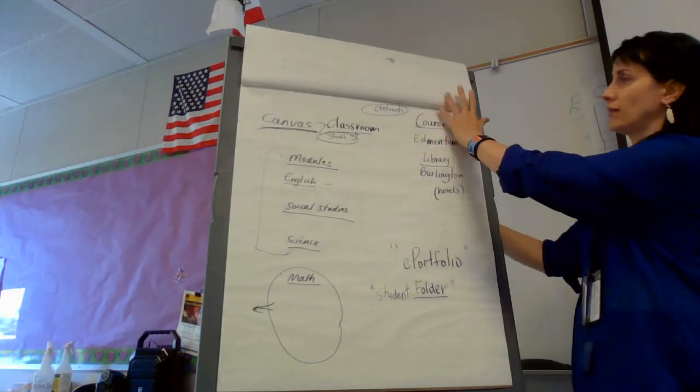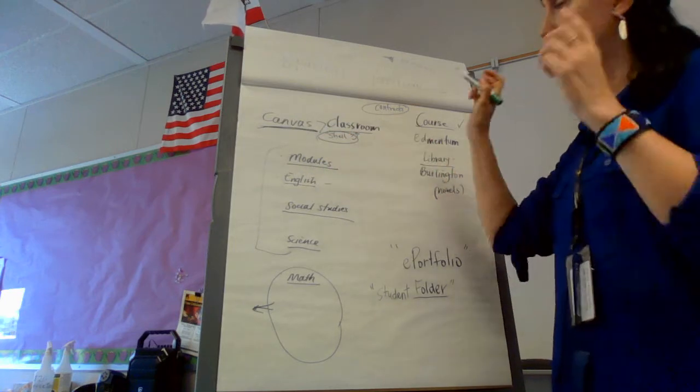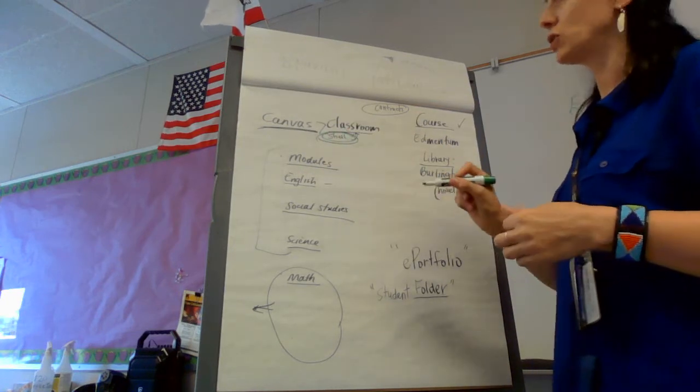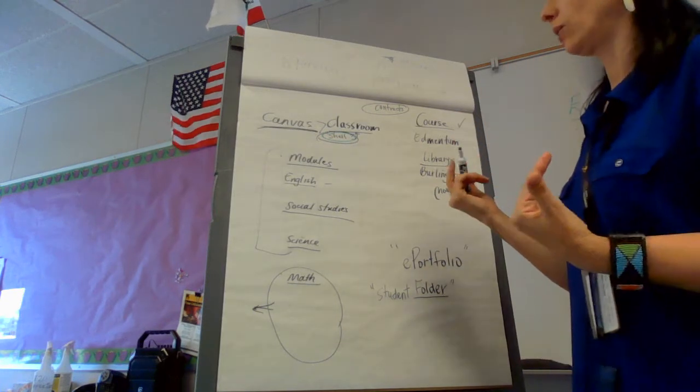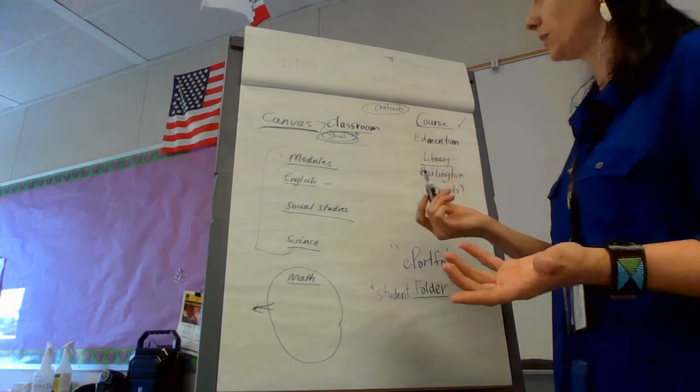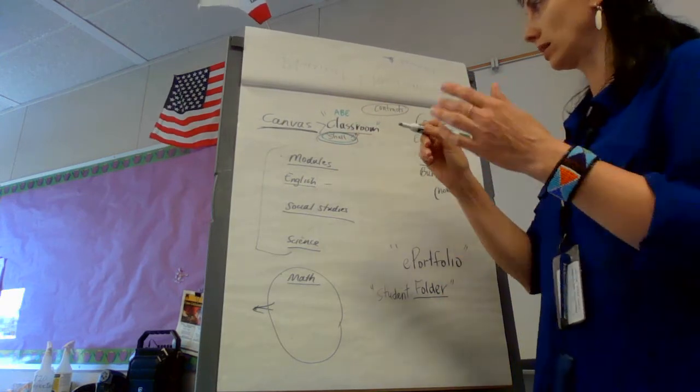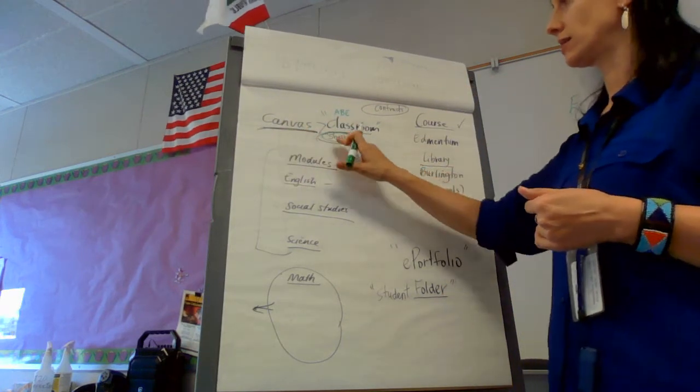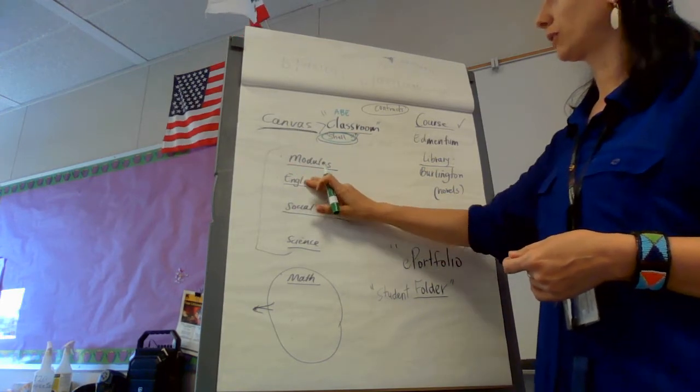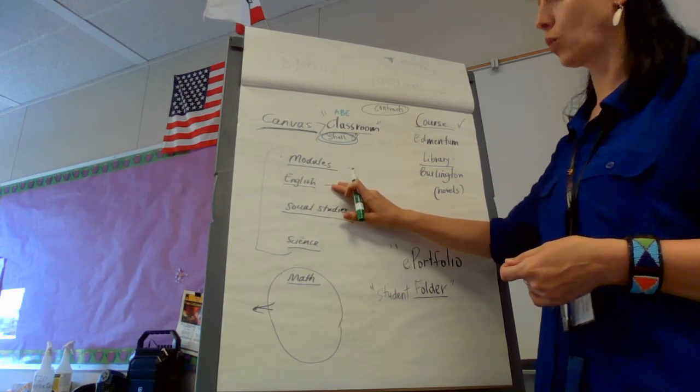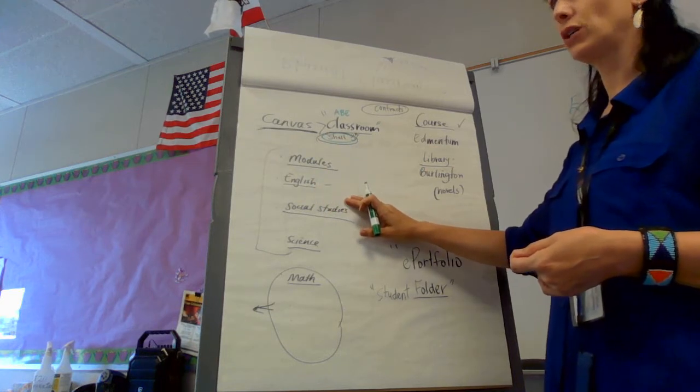When you're on Canvas, people have used the word shell. Canvas just means that there's an empty class that we created for you, and we're calling it ABE or ASE. But technically, that is your ABE classroom. That's your classroom. It's online. Canvas is going to manage your classroom. So if I'm creating my modules, I'm going to create one for English. If I'm doing a module for English 1, ABE, great. Do I need an English 2, ABE? Sure, I can do that too. English 3? Sure, I can do that too.